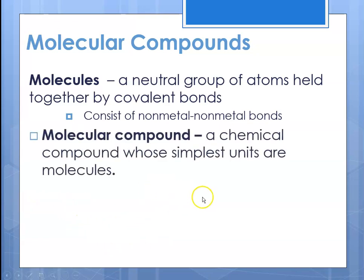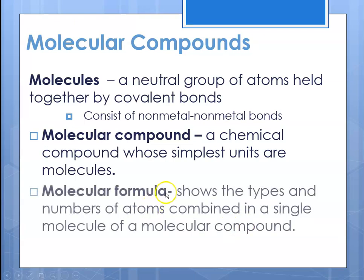A molecular compound is a chemical compound whose simplest units are molecules. Covalent bonds result when atoms are forced to share electrons, so if they're sharing electrons over many atoms, you have a molecule. The molecular formula shows the types and numbers of atoms combined in a single molecule of a covalently bonded compound, which is a molecular compound.